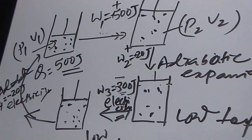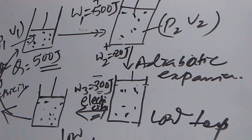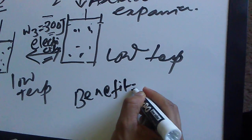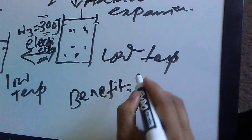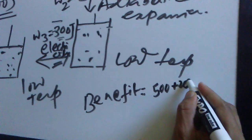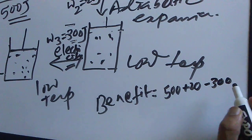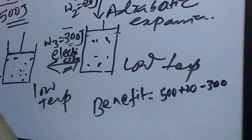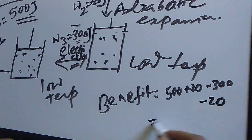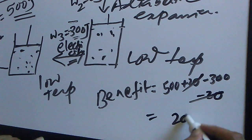So what is the net benefit? The work obtained is: plus 500 joules from isothermal expansion and plus 20 joules from adiabatic expansion. The investments are: minus 300 joules for isothermal compression and minus 20 joules for adiabatic compression. The 20-joule terms cancel, leaving a net work of 500 minus 300 equals 200 joules.